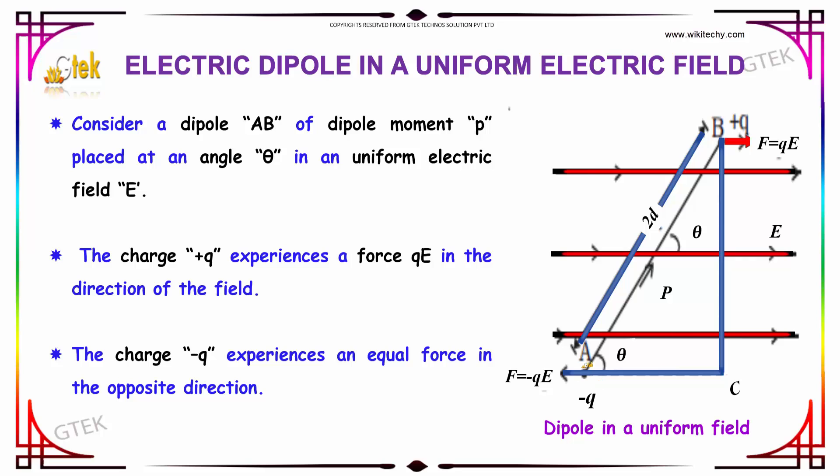Consider the dipole AB, you can see here AB. So the dipole AB of dipole moment P is placed at an angle theta in a uniform electric field E.